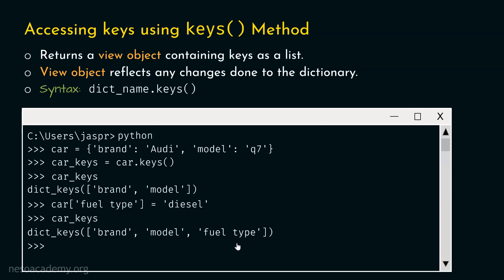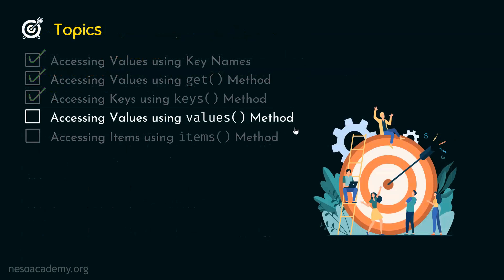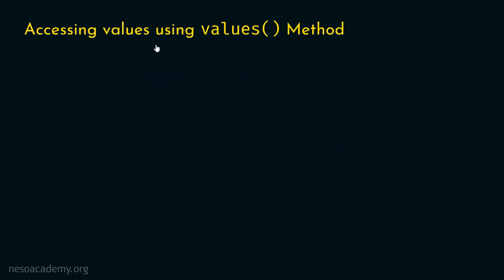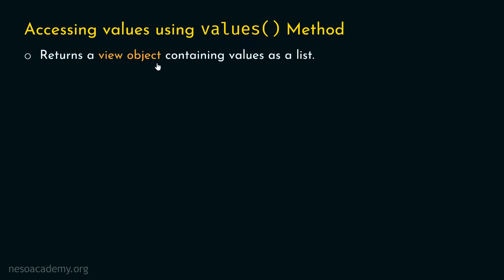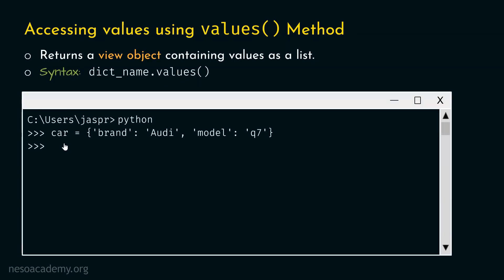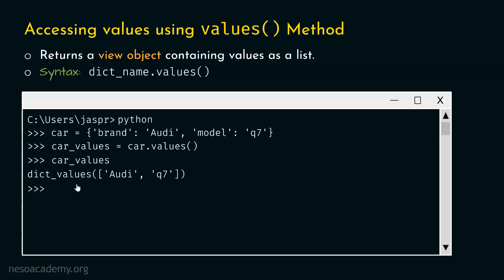Now let's move on to the next topic: accessing values using the values method. We can access all values of a dictionary using the values method. The values method also returns a view object containing values as a list. The syntax is dictionary name dot values. Let's open our command prompt and consider the same car dictionary. Let's type car_values equal to car.values(), then hit enter and type car_values. We get a view object with two values: Audi and Q7.